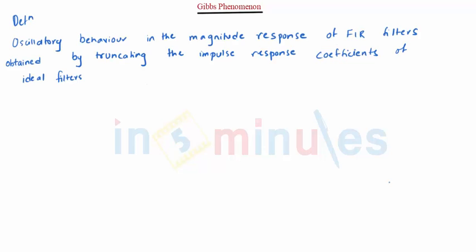Gibbs Phenomenon is defined as the oscillatory behavior in the magnitude response of FIR filters obtained by truncating the impulse response coefficients of ideal filters.